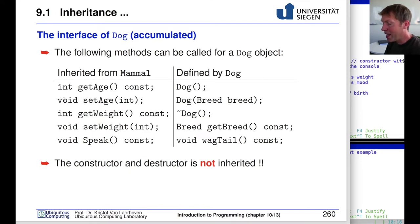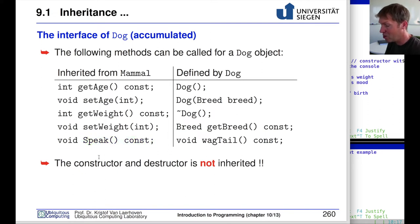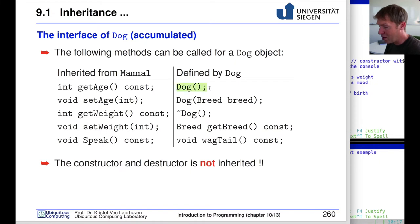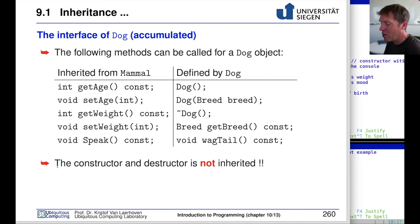To summarize what dog inherits from mammal: the get age, set age, get weight, and set weight functions, as well as speak — five function members. Dog itself additionally has a default constructor, a constructor with breed, a destructor, a get breed function, and a wag tail function. Importantly, the constructor and destructor of mammal are not inherited by dog.